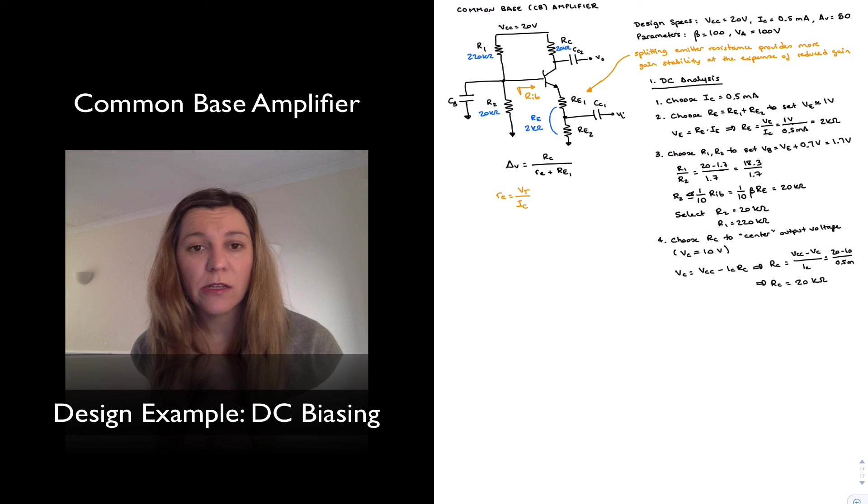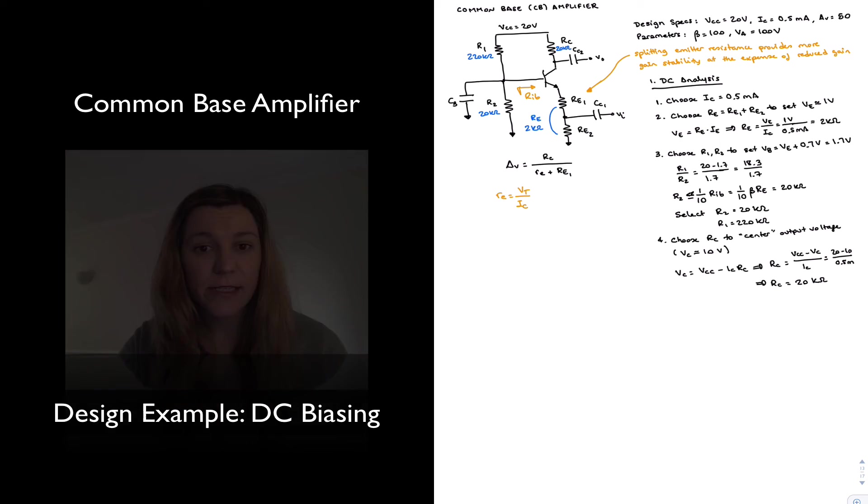And that's it. This is the value of my resistors to set up my DC bias point. Next, we're going to look at the AC analysis.